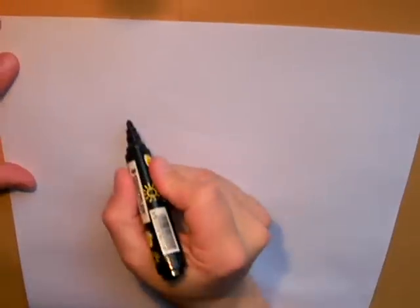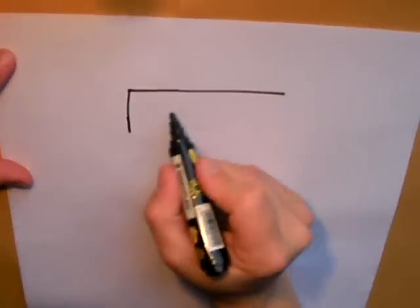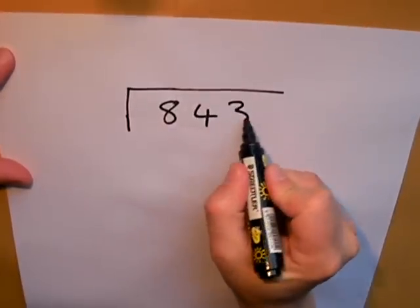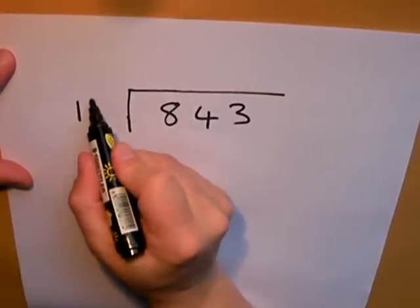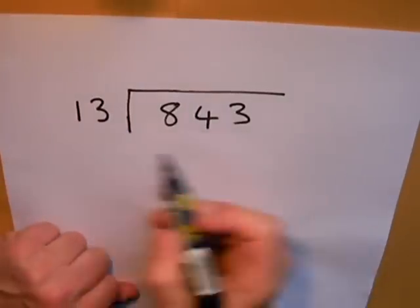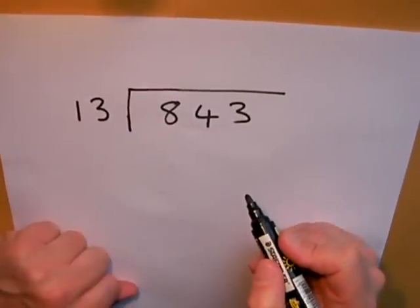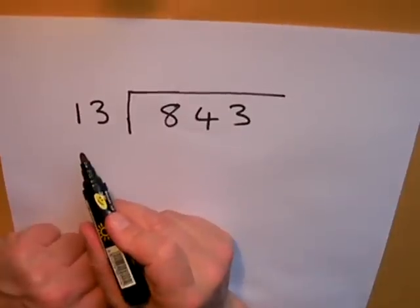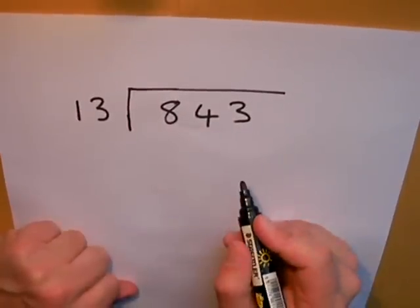Okay, I'm going to do a division now by a double-digit number: 843 divided by 13. This is more difficult with a double-digit number because I don't actually know the times table of 13 off by heart.